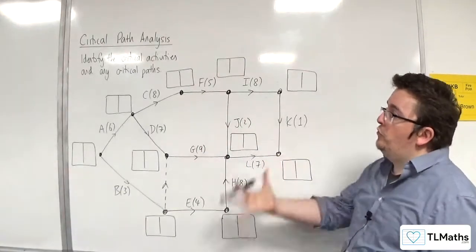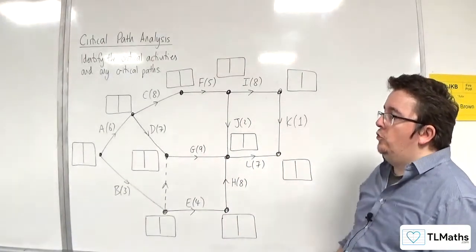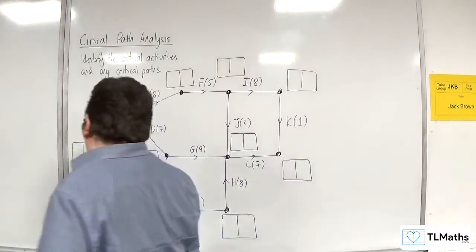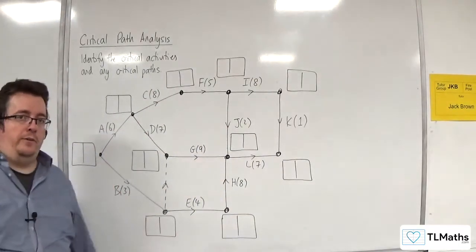In this video, I want to identify the critical activities and any critical paths. So I'm going to have to perform a forward and backward pass first.